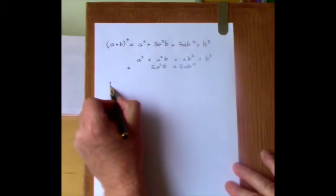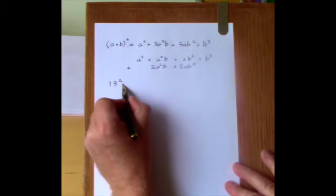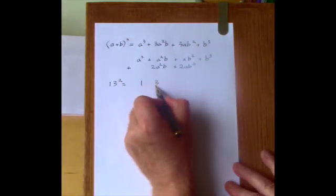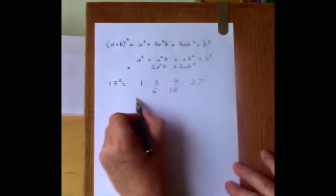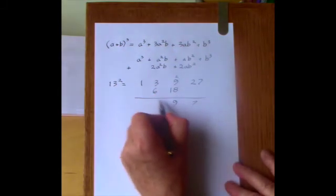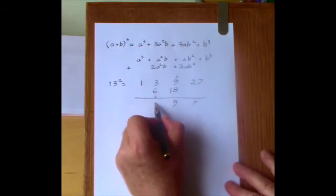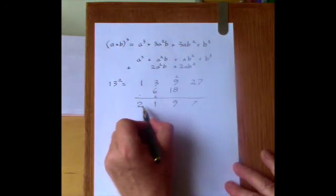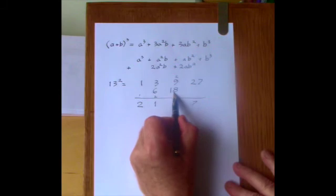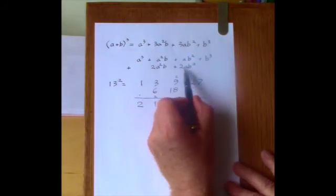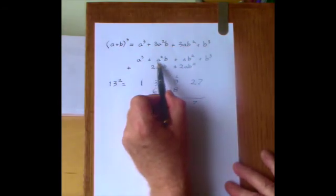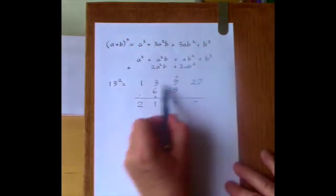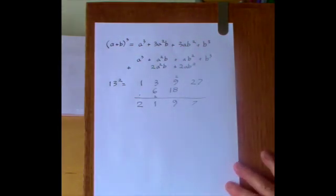I'll take another example: 13 cubed. Here the working would be 1, 3, 9, 27, and double these two. Then add up to give the answer: 3a² plus 11 and a 2. And here you can see the 6 and the 18 are effectively the 2a²b and the 2ab². And you can also see how the ratio is in operation in this row. So that's a very delightful way to cube any two-digit numbers.